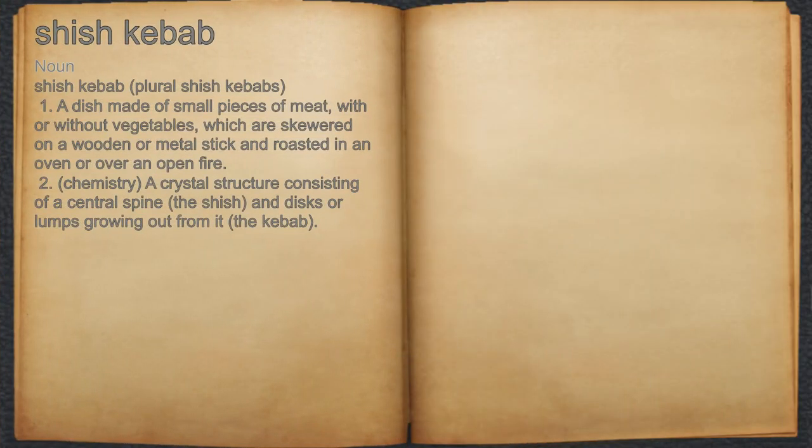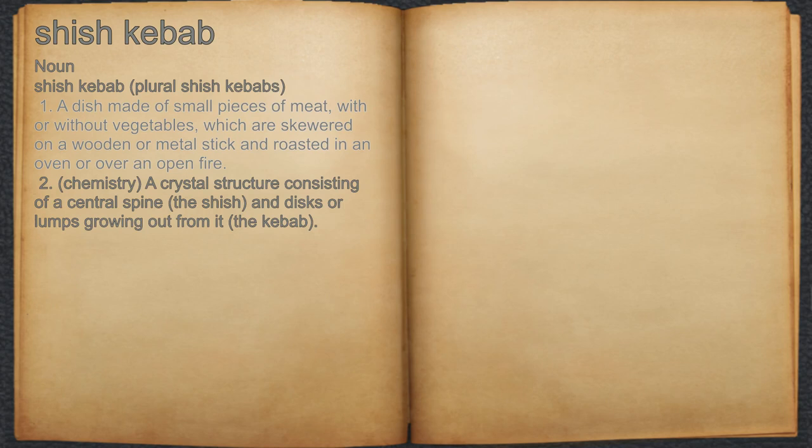Shish Kebab. Noun. 1. A dish made of small pieces of meat, with or without vegetables, which are skewered on a wooden or metal stick and roasted in an oven or over an open fire.